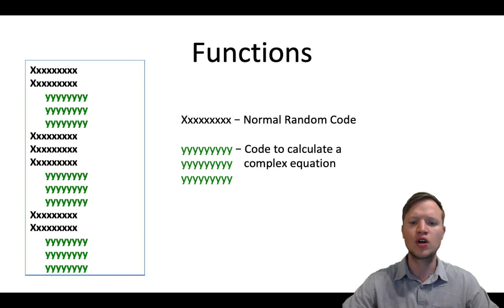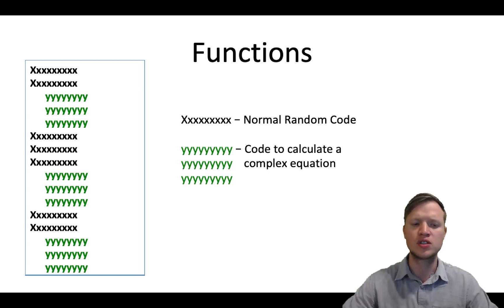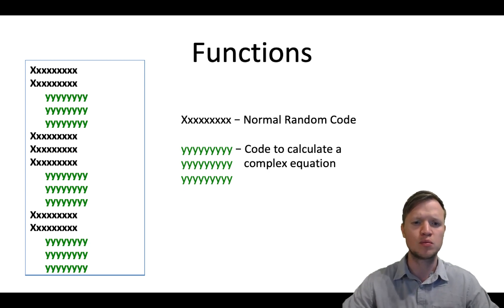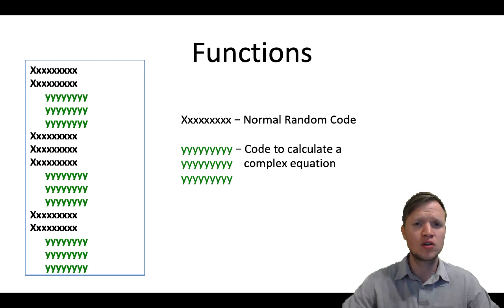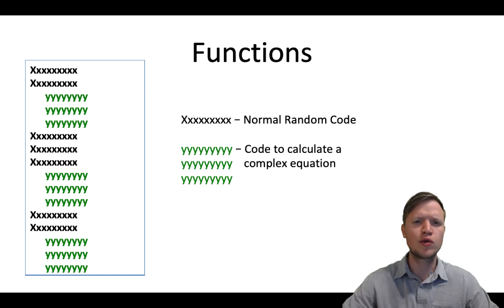As you can see, we've got a block of random code together with code to calculate a complex equation. Throughout this block, the random code snippets are not going to be repeated. Then we've got code to calculate a complex equation represented by three lines, and those three lines repeat themselves a few times in this block. Thus we need to repeat the same code over and over again by copy and pasting, which may increase our chances of making errors and making the program inefficient.